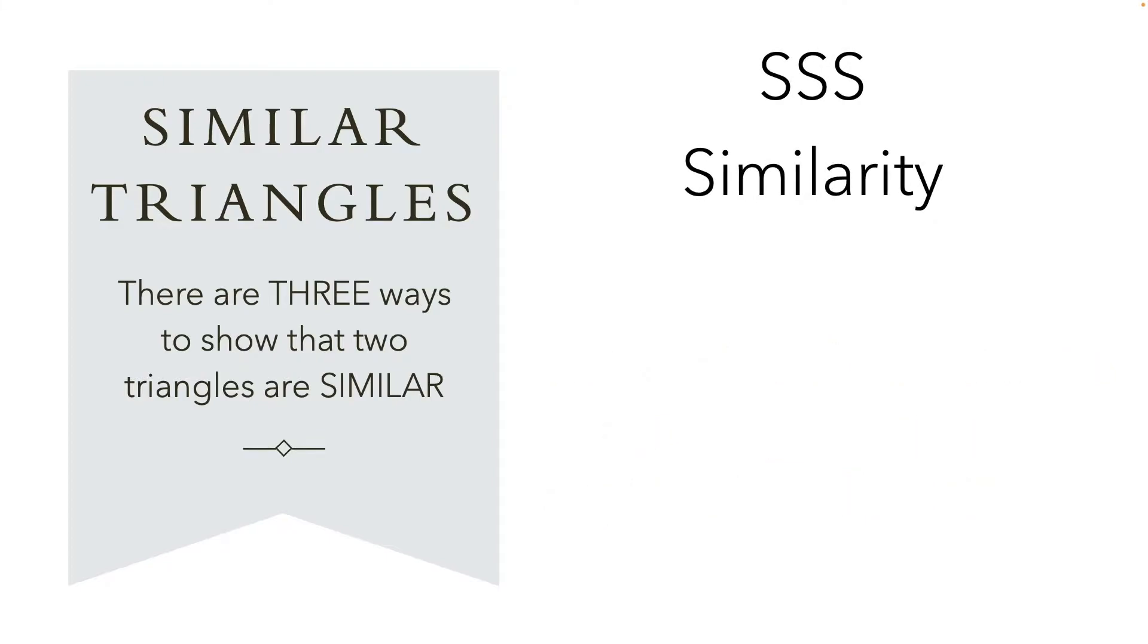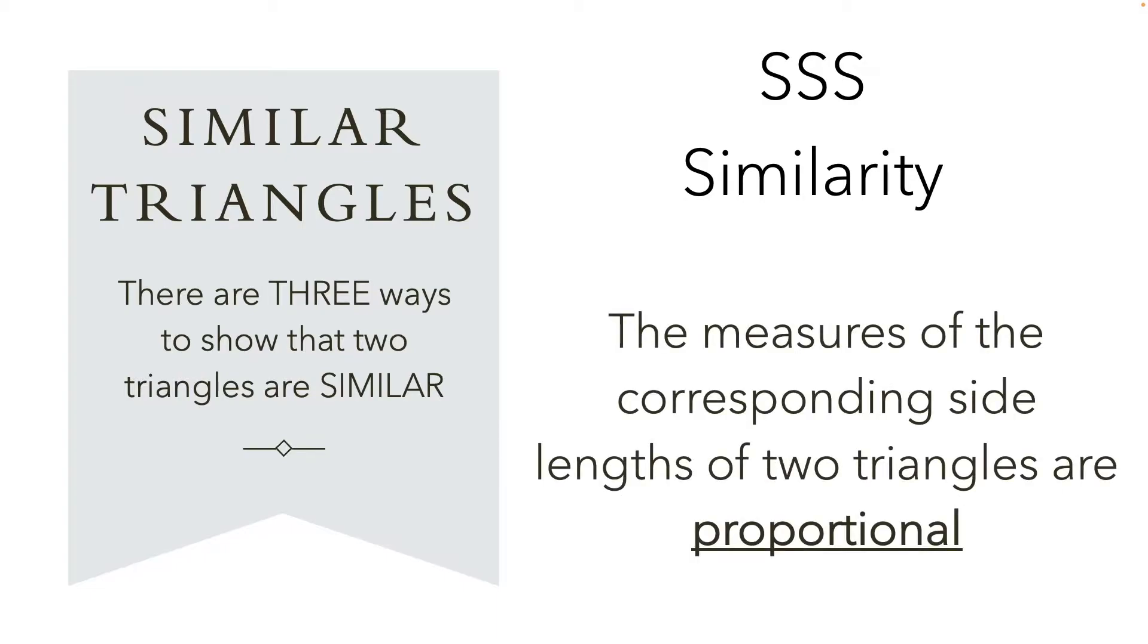We also have the side-side-side similarity. So that's when the measures of the corresponding side lengths of the two triangles are proportional. Now when we were talking about congruent triangles, all the sides, the corresponding sides had to be equal. Now, they just have to be proportional.